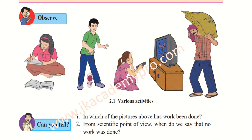Observe these diagrams. Can you tell in which of the pictures above has work been done? And from the scientific point of view, when do we say that no work is done? In these pictures, we can see that a girl is writing in her book, a boy is playing with the ball, a girl is watching television, and a man is doing labour work. You would say that all of them are doing some kind of work. But in the scientific point of view, when we take into account physics, work can only be done if an object is displaced.